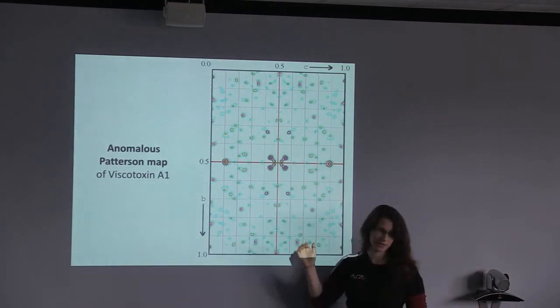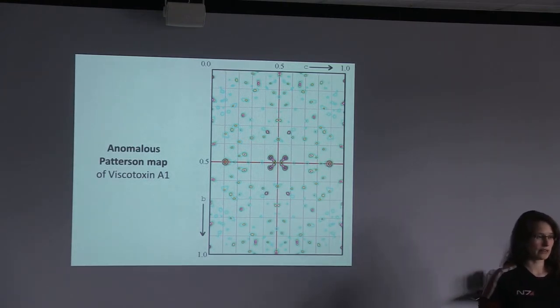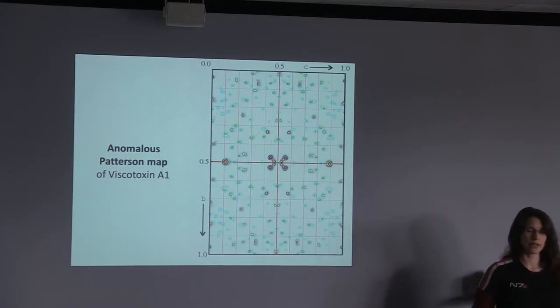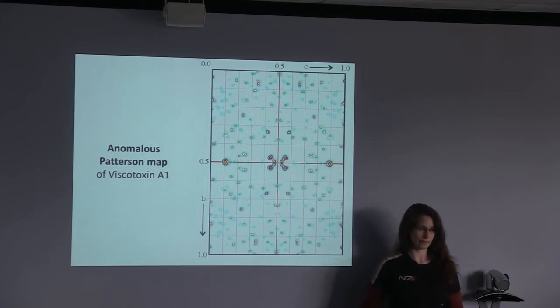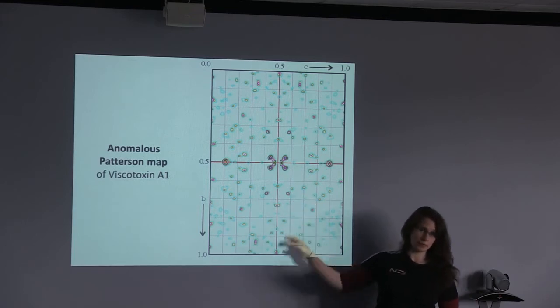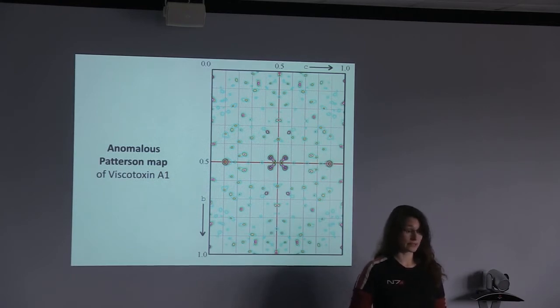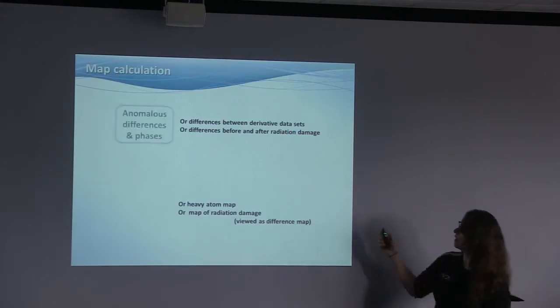Now, if we take the anomalous Patterson of the same thing, it becomes a lot less crowded. And that is because now we are only seeing peaks for interatomic distances between anomalous scatterers. If we take the intensity differences instead of the intensities to generate our Patterson, we are only getting peaks that refer to the interatomic distances of the anomalous scatterers or marker atoms. And in the old days, people looked at those and solved their substructures. So if an old-fashioned person shows you something like this on their screen, you can nod wisely and say, oh, a Harker section. It's very important.